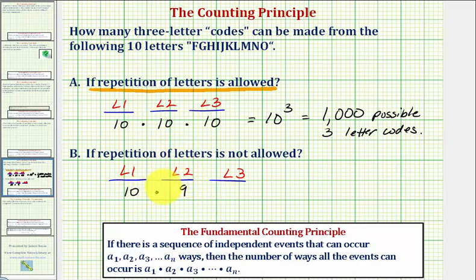And now we've used two letters, so there are only eight ways to select the third letter. And again this is because repetition is not allowed, we may not reuse a letter. So the number of three-letter codes, if repetition is not allowed, would be equal to ten times nine times eight, which is equal to 720.